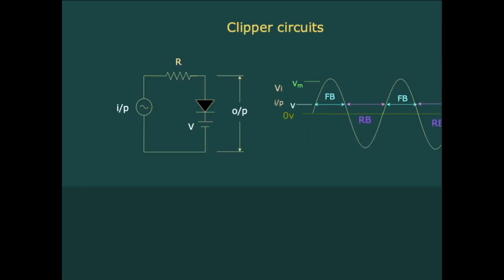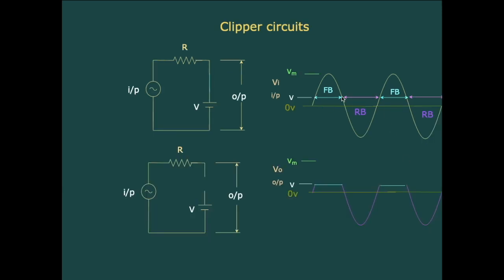Looking at the same circuit with the polarity of the power supply inverted, the diode is forward biased when the anode is more positive than the DC supply voltage V. For Vi greater than V the diode acts as a closed switch giving output equal to plus V, while for Vi less than V the diode acts as an open switch and output equals the input. This part of the input signal above V is clipped off.